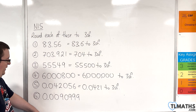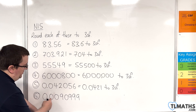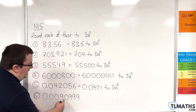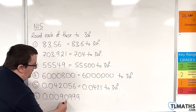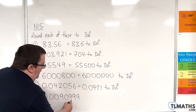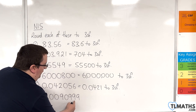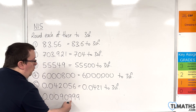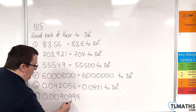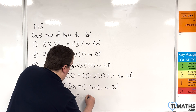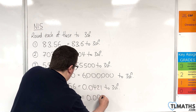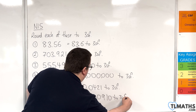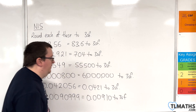And the last one, number six. The first non-zero number that we come across is the nine, so that's the first significant figure. Then this is the second, this is the third. The number to the right is five or more so we round this up. So this would be 0.00910 to three significant figures.